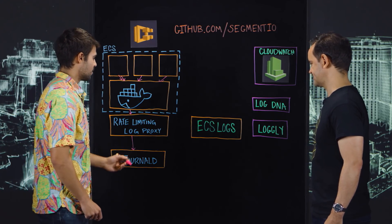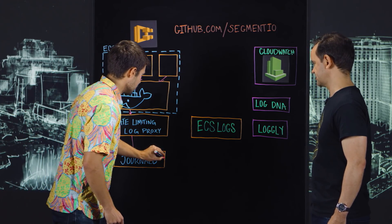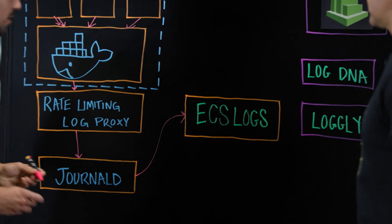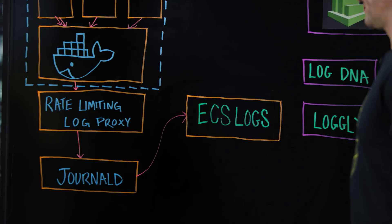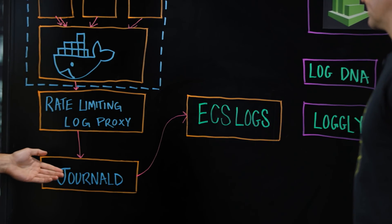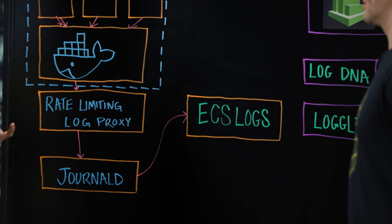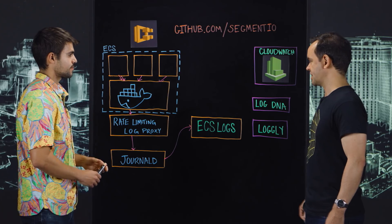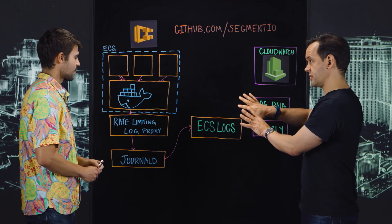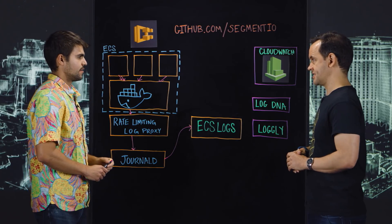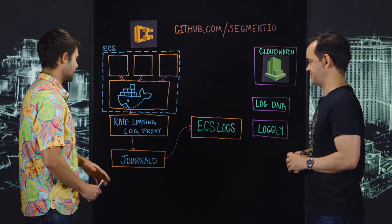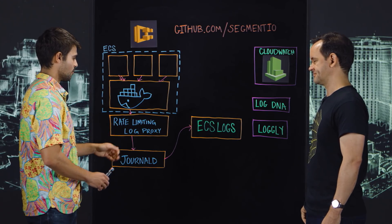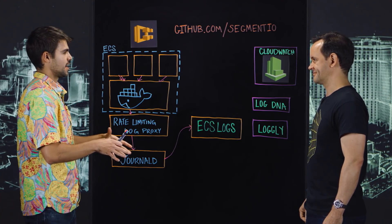That happens with another open source tool we wrote called our ECS logs binary. This is an open source Go binary which tails journald and looks for entries tagged with a container ID and a service tag. These all run on an instance in the ECS cluster, so for a given instance it's all self-contained.